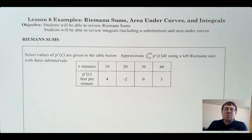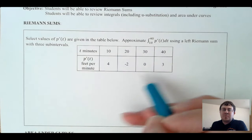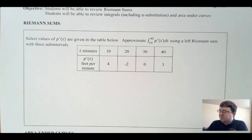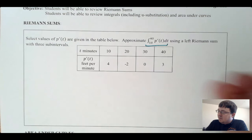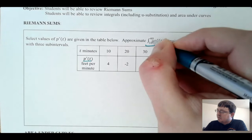Let's start with Riemann sums. Riemann sums are generally given to us via a table like this, and we want to approximate the integral of a function using that table. So if I want to approximate the integral of p prime of t dt, where p prime is given in my table, I want to integrate from 10 to 40, and I'm going from 10 to 40 in my table.